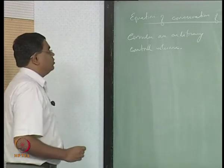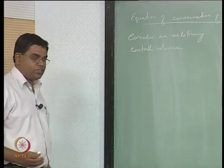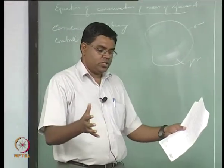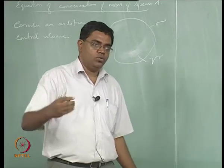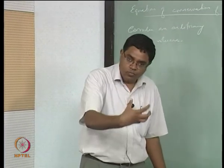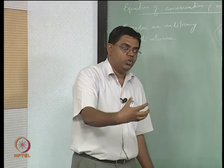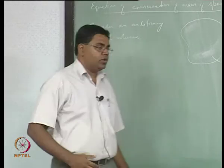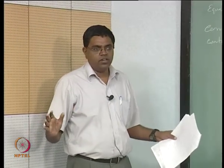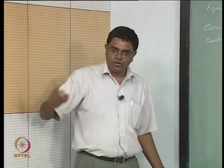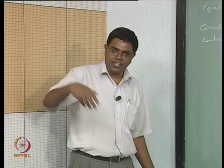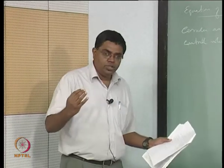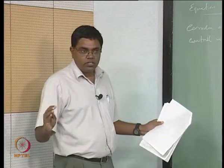The question is: how do you conserve mass? You look at a control volume and keep in account the rate of change of whatever you want inside, equal to what is coming in versus what is going out. This is very intuitive — like looking at your bank account in terms of what money is coming in and what is getting depleted.